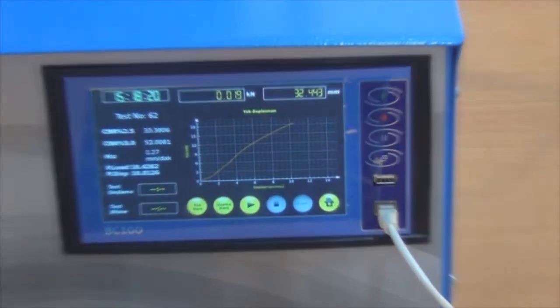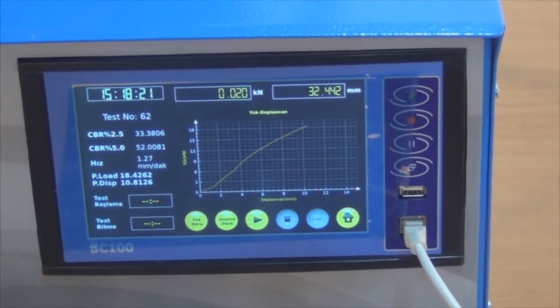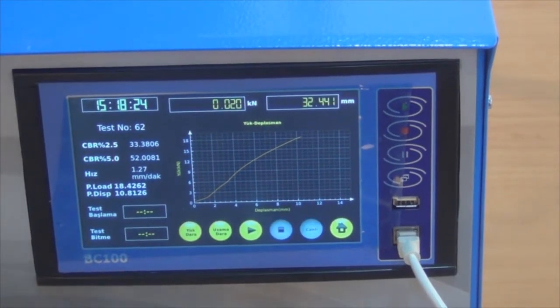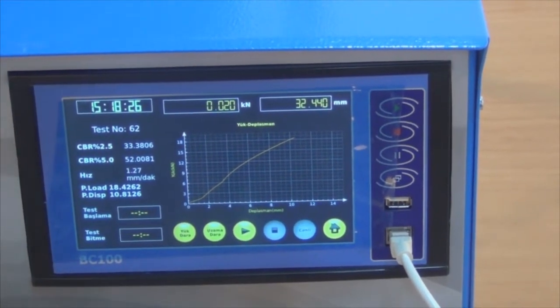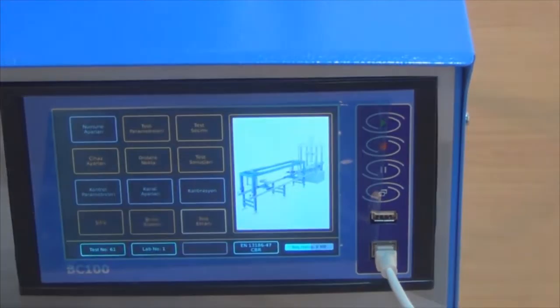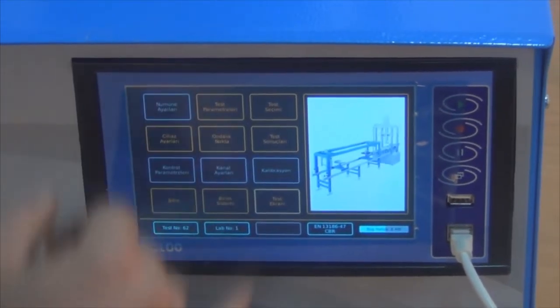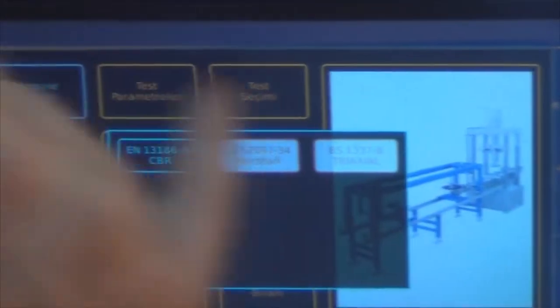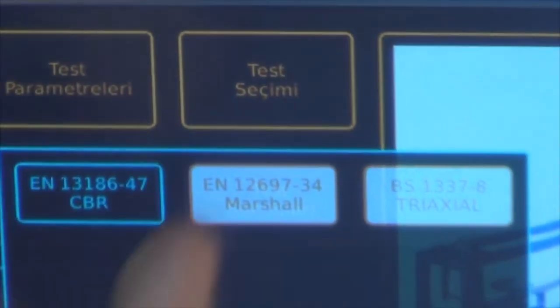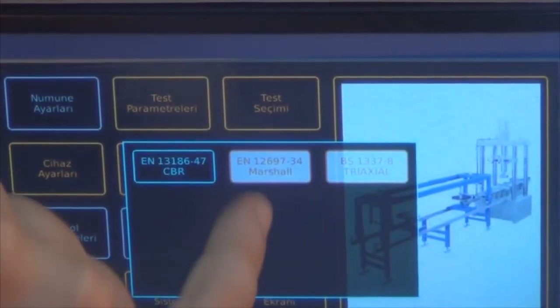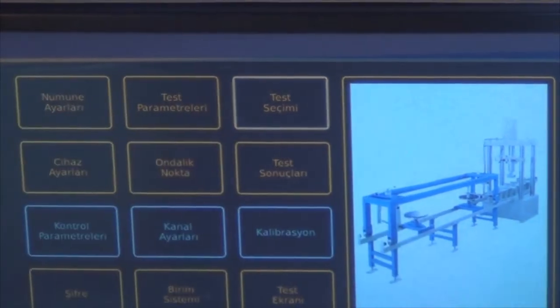In the first part of the video, we conducted a CBR test and this graph belongs to that test. Now we are going to press this button to go to the menu selection page. From the third button we have CBR, Marshall, and Triaxial. We are going to choose the second option, Marshall.